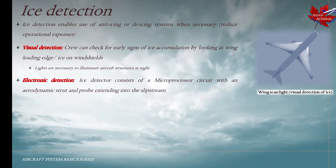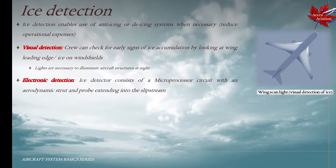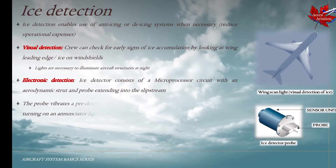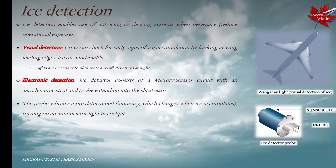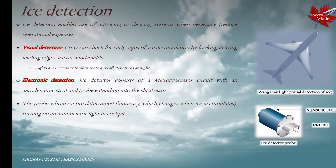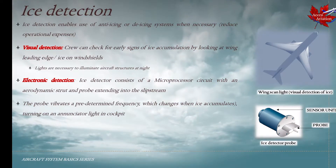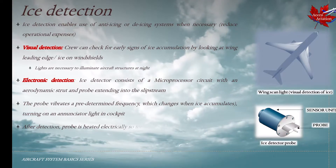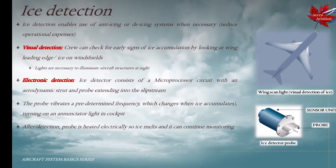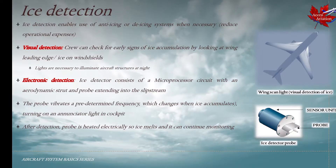Electronic ice detection is another feature. The ice detector consists of a microprocessor circuit with an aerodynamic strut and a probe extending into the slipstream. The probe vibrates at a pre-determined frequency which changes when ice accumulates on it, so the change in frequency would turn on an annunciator light in the cockpit. After detection, the probe is heated electrically so whatever ice is accumulated on it can melt and the probe would continue monitoring for future icing conditions.